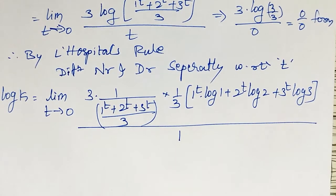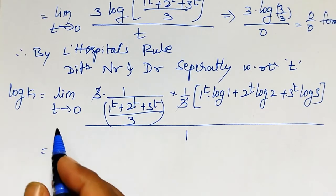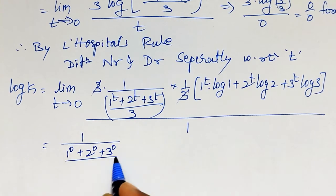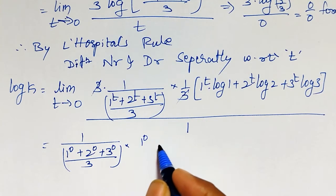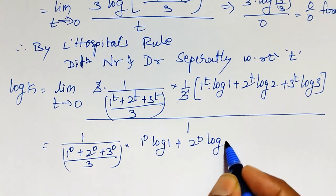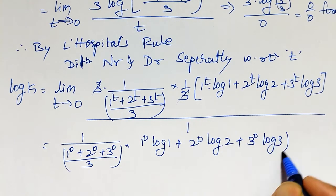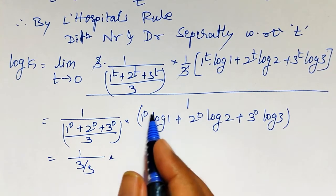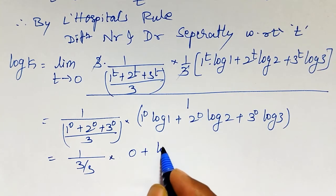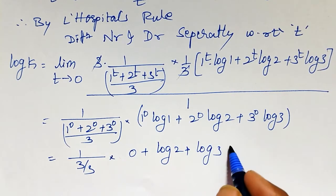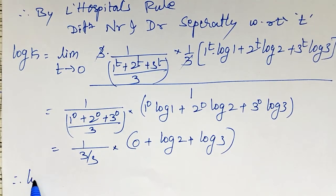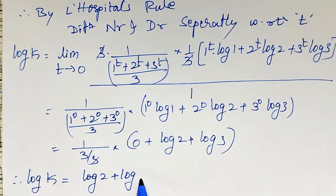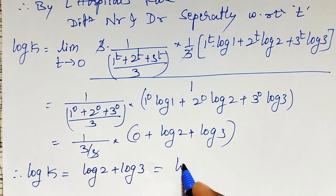Substituting t = 0: 1^0 = 1, 2^0 = 1, 3^0 = 1, so the denominator becomes (1+1+1)/3 = 1. The numerator becomes 1·log1 + 1·log2 + 1·log3 = 0 + log2 + log3. Therefore log k = log2 + log3, which by the log property equals log(2×3).